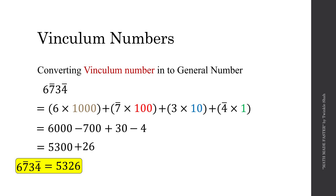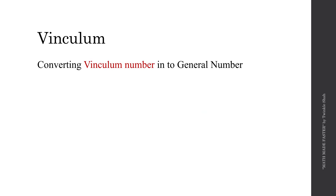As you can see, as the Winklum number gets bigger, the procedure to convert it into a general number becomes more cumbersome. The idea behind speed math is to simplify the techniques so we can solve problems faster. Now let's see how we can improve this procedure. If you remember something we learned previously — all from 9 and last from 10 — we can apply that here to convert Winklum numbers into general numbers.